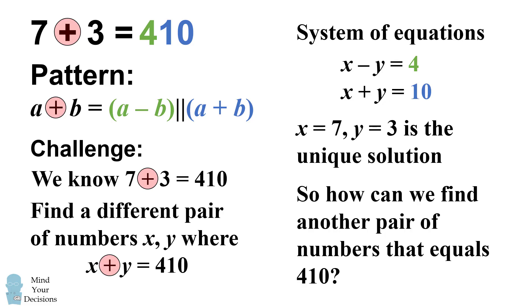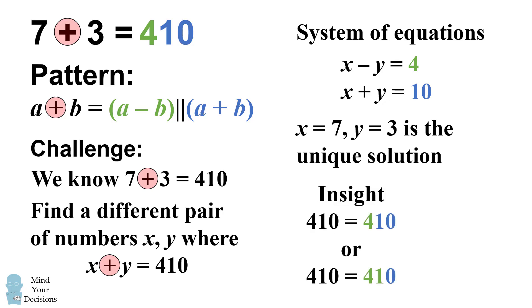Well, think about the way you can read 410. There are actually two different ways. You can read it as 4 and 10, or you can read it as 41 and 0. So what happens if we read it as 41 and 0? Well, we get a different set of equations. We get x minus y is equal to 41, and x plus y is equal to 0.